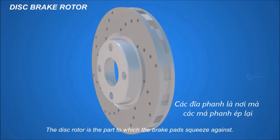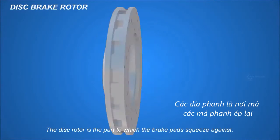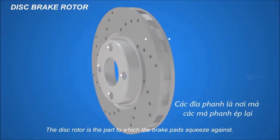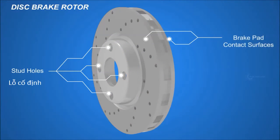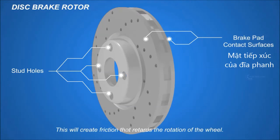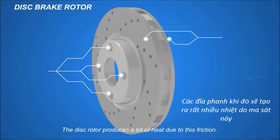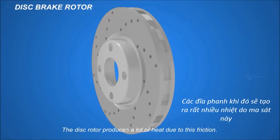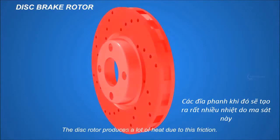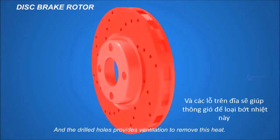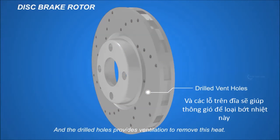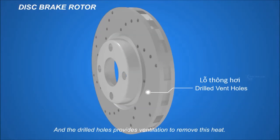The disc rotor is the part against which the brake pads squeeze. This creates friction that retards the rotation of the wheel. The disc rotor produces a lot of heat due to this friction, and the drilled holes provide ventilation to remove this heat.